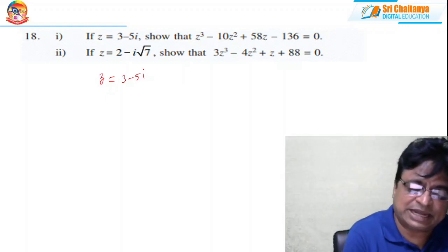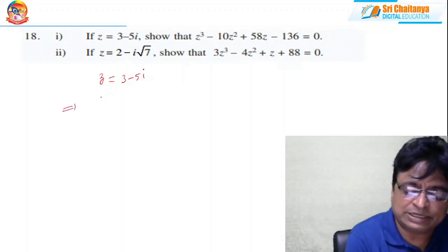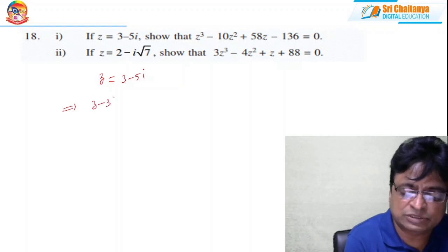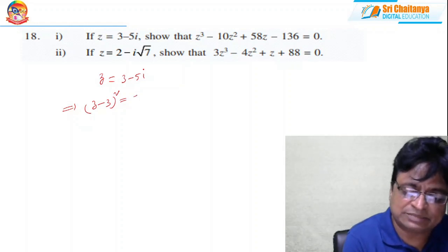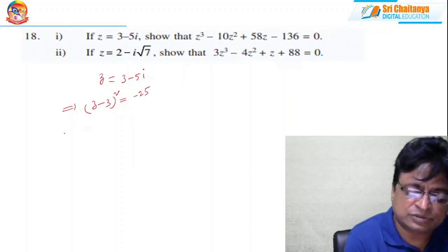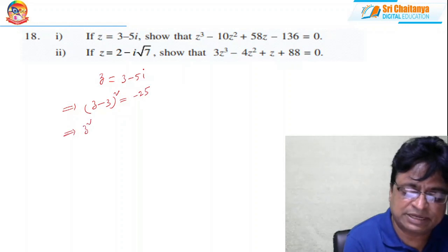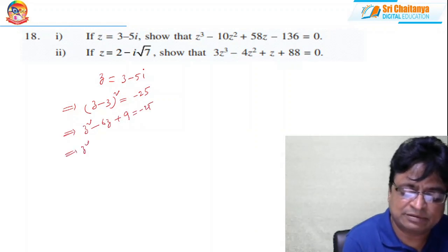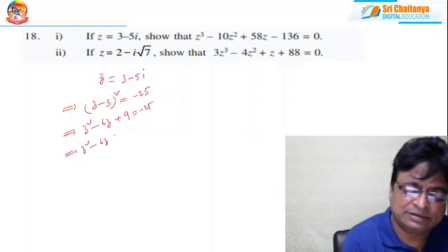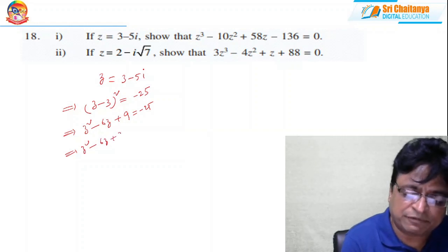Here I am introducing another technique. Consider (z − 3)² = (−5i)² = 25i² = −25. After simplification this gives z² − 6z + 9 = −25, so z² − 6z + 34 = 0.